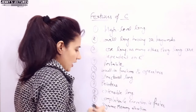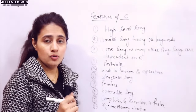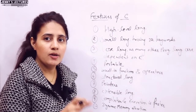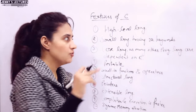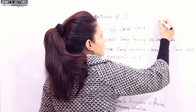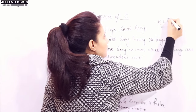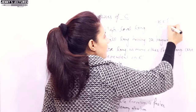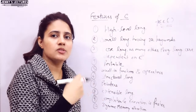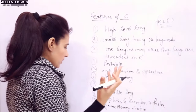C supports dynamic memory allocation. You can free allocated memory at any time by calling the free() function. We will also discuss how to call this function in a program.